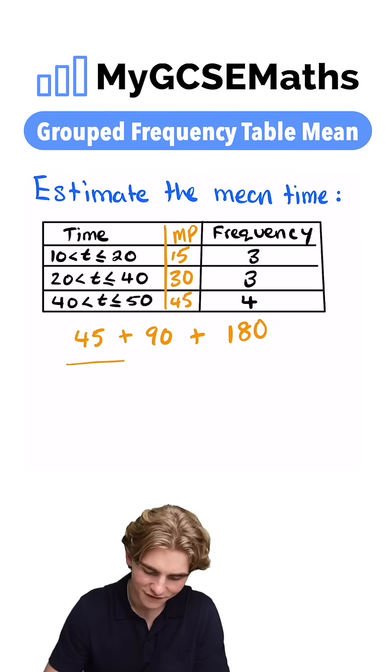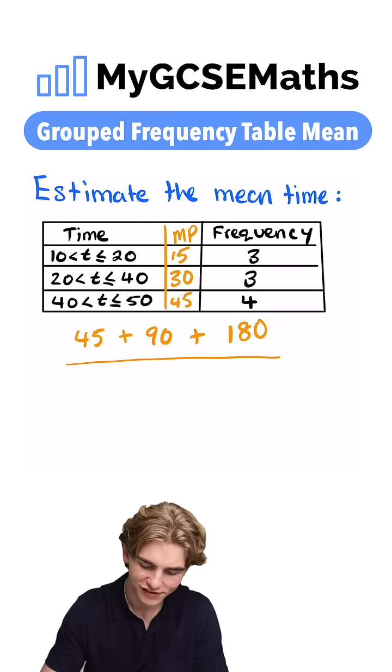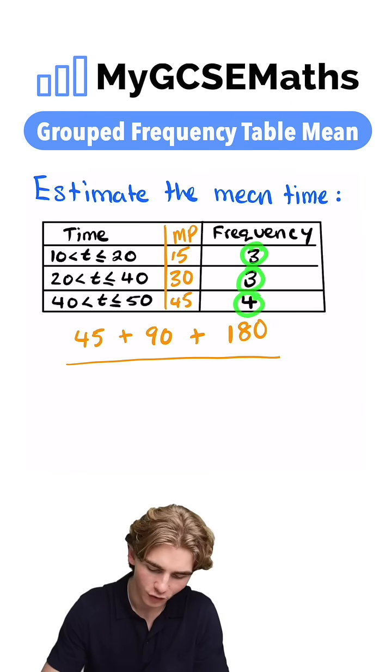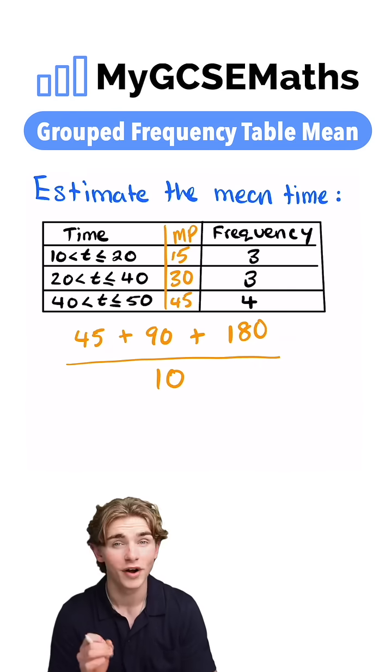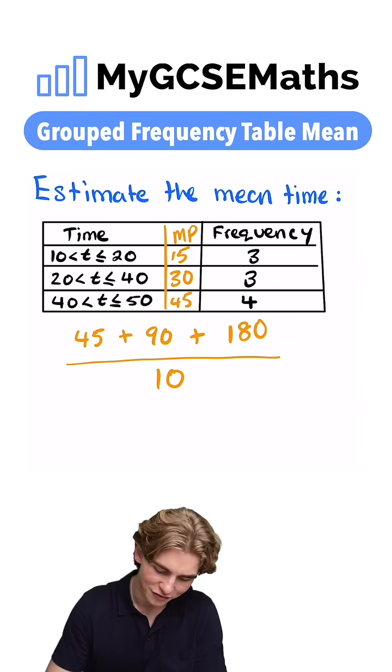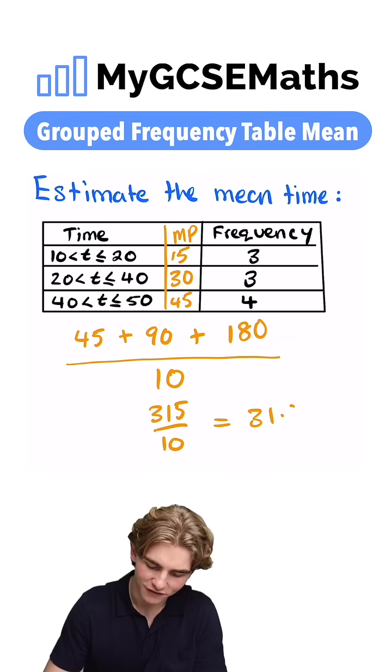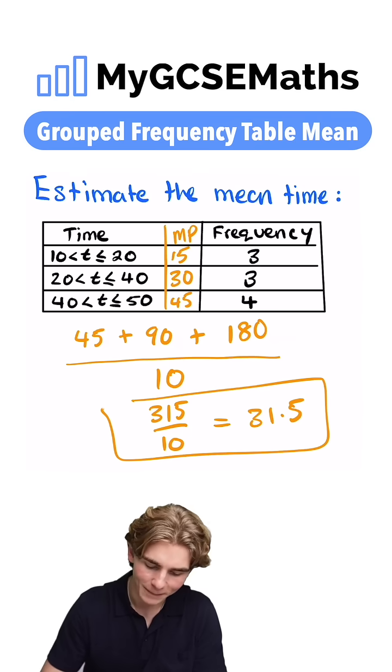We're going to divide that by the sum of our frequencies. 3 plus 3 is 6, plus 4 is 10. So we divide by 10. 45 plus 90 is 135, plus 180 is 315. So we have 315 divided by 10, which gives us 31.5 as our estimate for the mean.